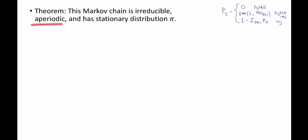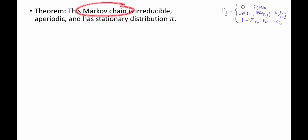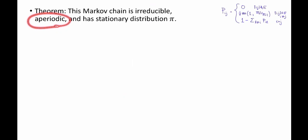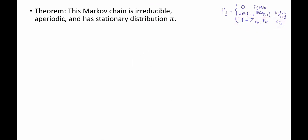Here's a theorem: this Markov chain is irreducible, aperiodic, and has stationary distribution pi. First, let's note this is a valid Markov chain — you should pause and check that the matrix P is a legit transition matrix. The fact that the chain is irreducible follows from the fact that the graph is connected. Aperiodicity follows from the self-loops: since we chose d to be bigger than the maximum degree, the self-loop case has positive probability. The only remaining thing to show is that pi is in fact the stationary distribution, which means we need to show pi * P = pi.